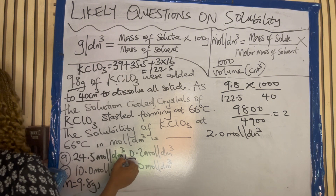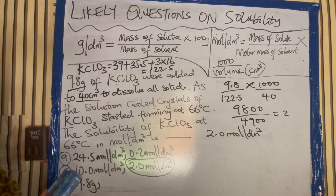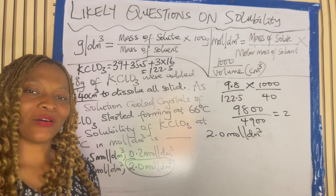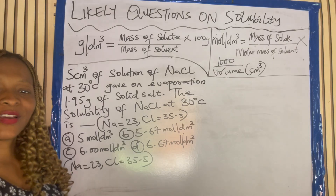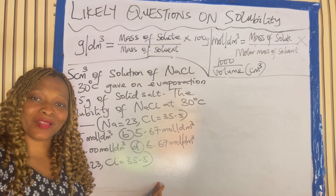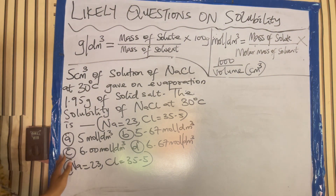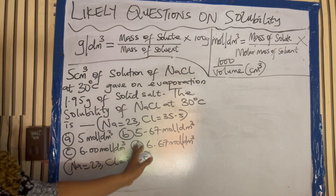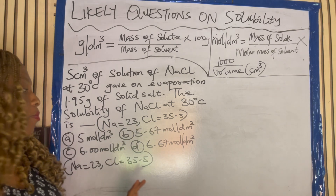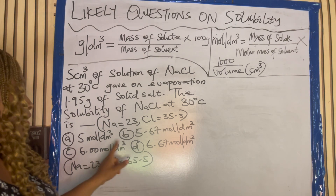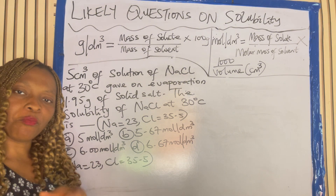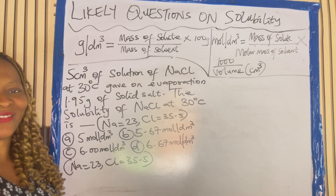The correct answer to this question is D. Isn't that simple? Let's look at another question. The second question is also in mole per dm cube. They didn't explicitly ask you to calculate in mole per dm cube, but looking at the answers, you can see that you are asked to calculate in mole per dm cube. Pause the video and try this question.